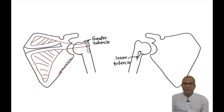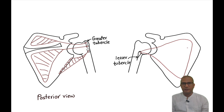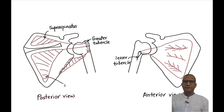We will draw teres minor on the dorsal aspect of the lateral border of the scapula and show its insertion on the lowermost impression of the greater tubercle of the humerus. Now we will show the subscapularis muscle arising from the subscapular fossa in the anterior view and show its insertion on the lesser tubercle of the humerus. Subscapularis is a multipinnate muscle.